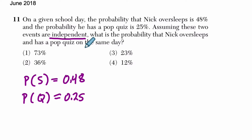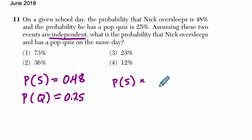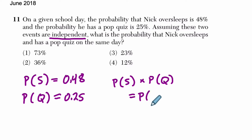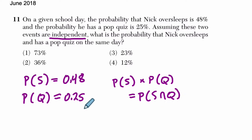What is the probability that he oversleeps and has a pop quiz? For independent events, you take the probability of one, multiplied by the probability of the other, and what you get is the probability of them both happening — the intersection, this symbol right here. So all we've got to do is multiply.